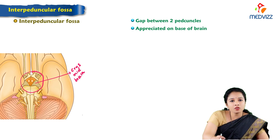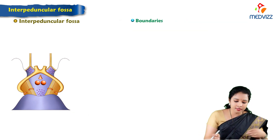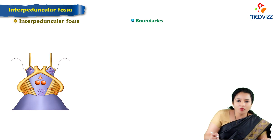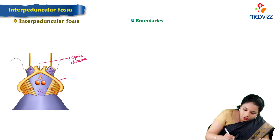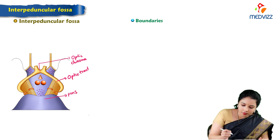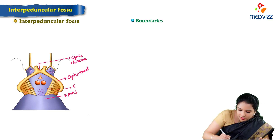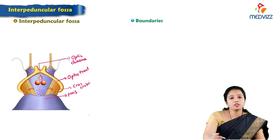Let's see the boundaries and contents of the interpeduncular fossa. Here is a closer view to show the boundaries and contents. Anteriorly it is bounded by the optic chiasma, and anterolaterally by the optic tract. Posteriorly, the superior part of the pons forms the boundary, that is the upper border of the pons. And on each side, the crus cerebri or cerebral peduncles, which are part of the midbrain, form the boundaries.